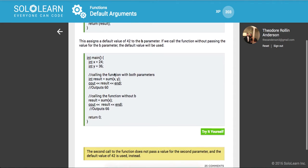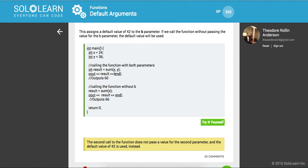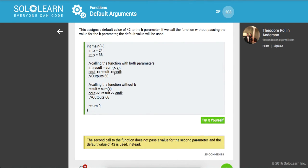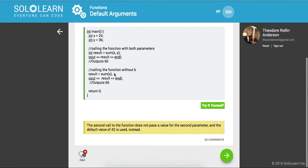So this assigns a default value of 42 to the B parameter. If we call the function without passing the value for the B parameter, the default value will be used. Cool. So the second call to the function does not pass a value for the second parameter and the default value of 42 is used instead.